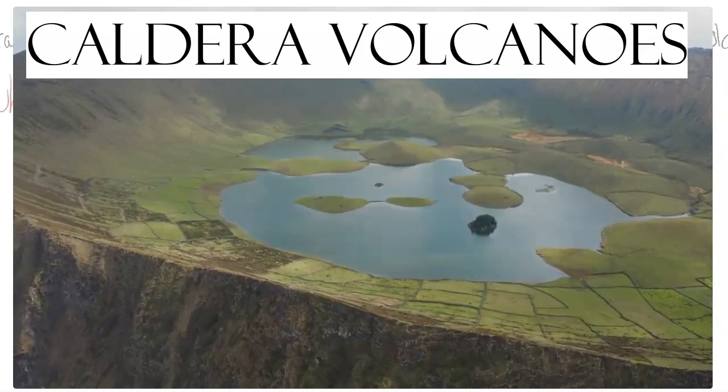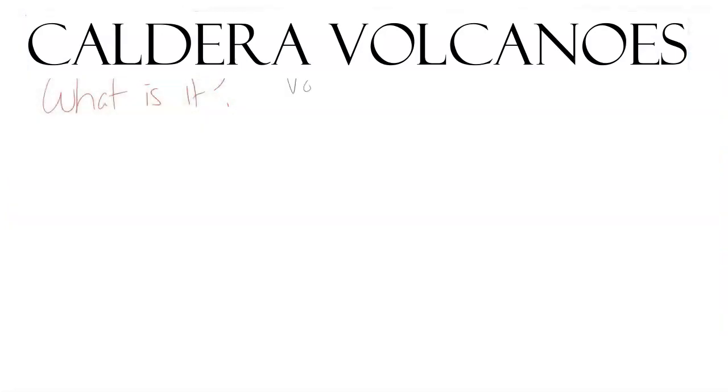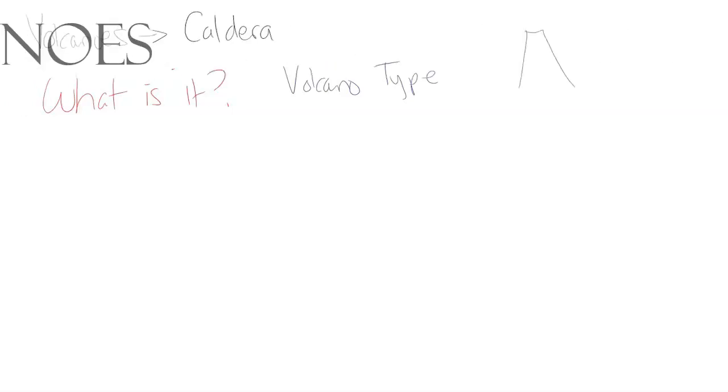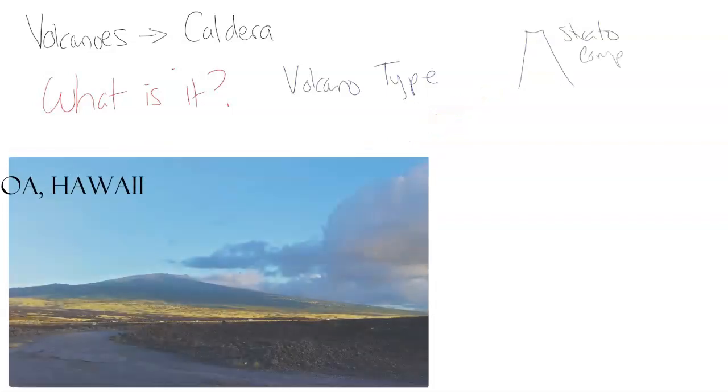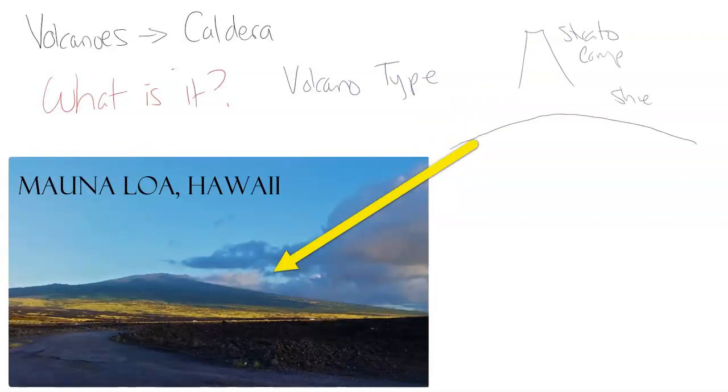So what is it? A caldera is a volcanic type of volcano. We have our regular classic stratos, steep sides, and also called composites. We have the very wide and tall shield volcano.